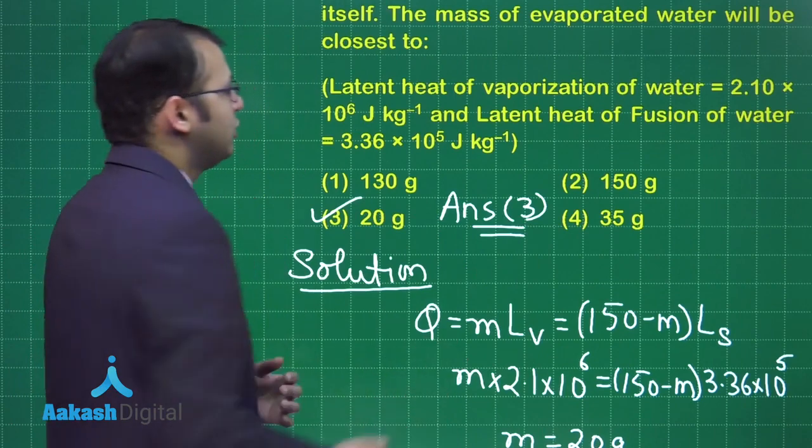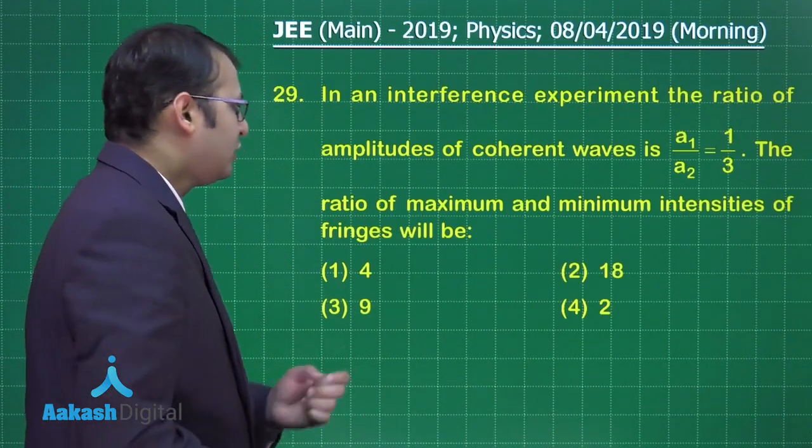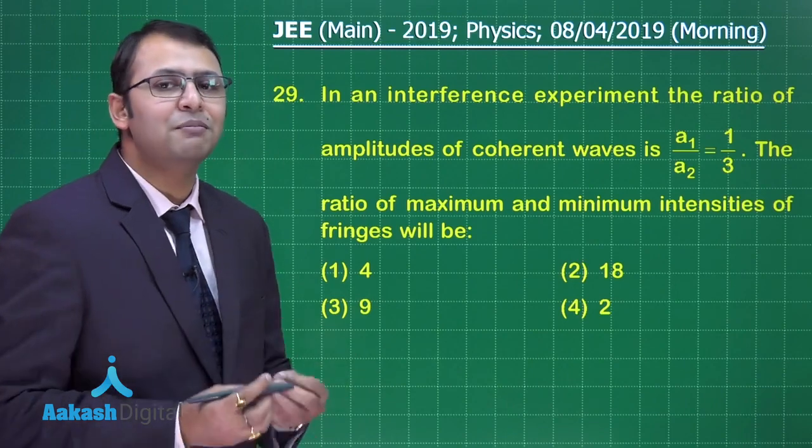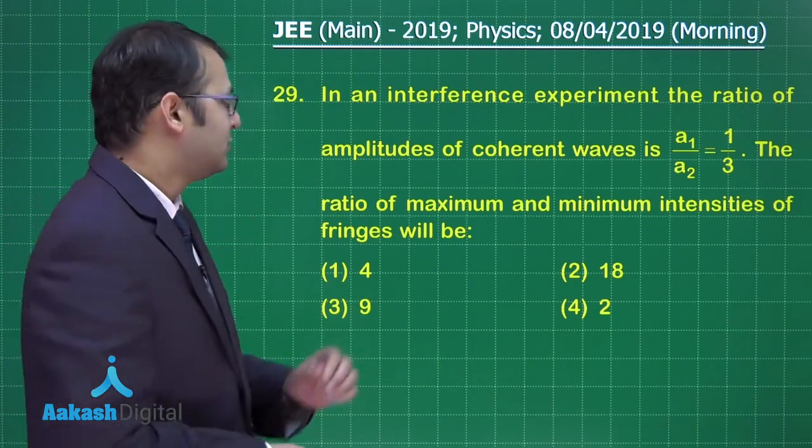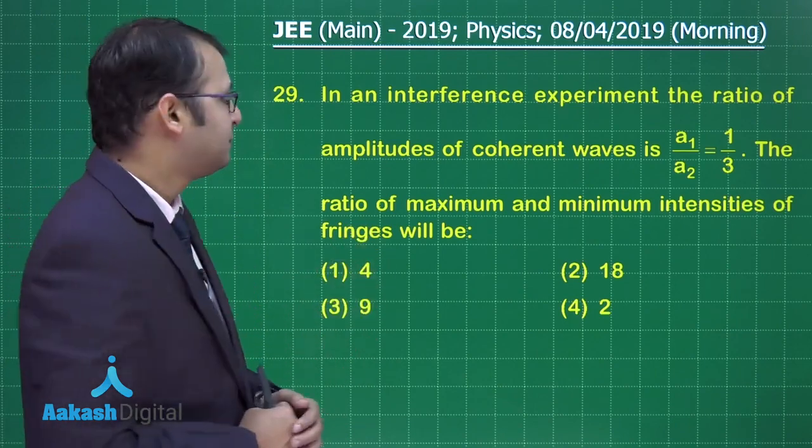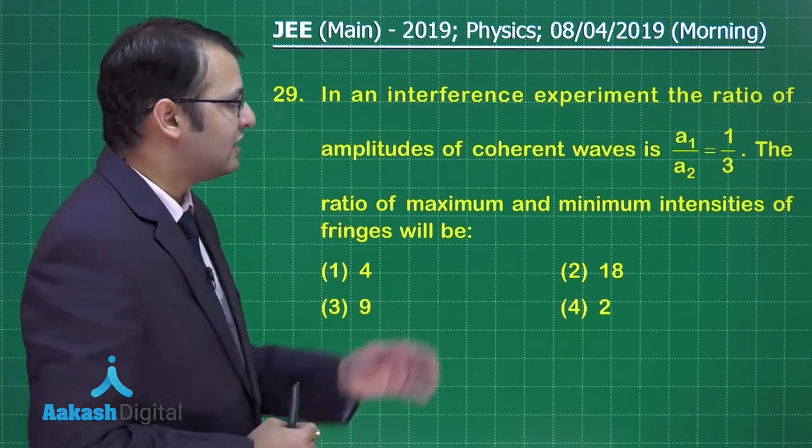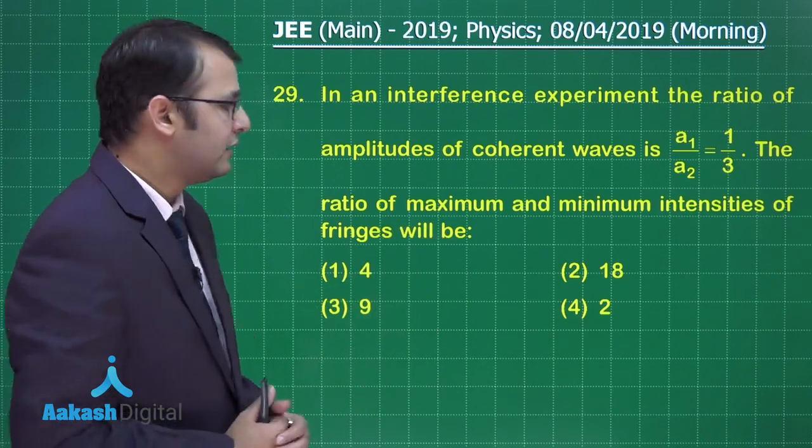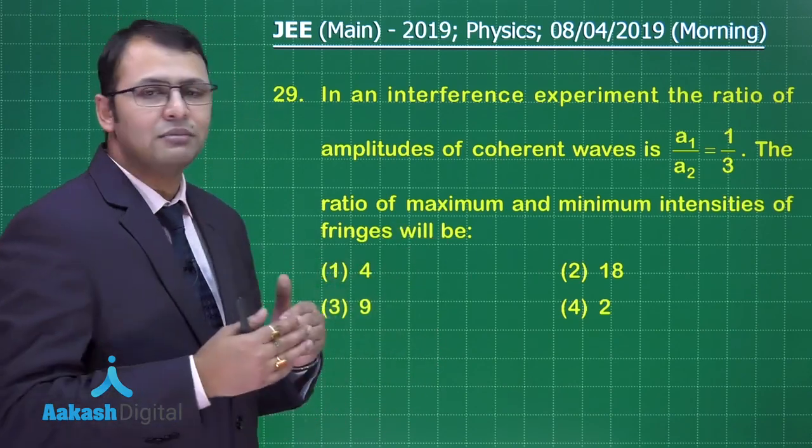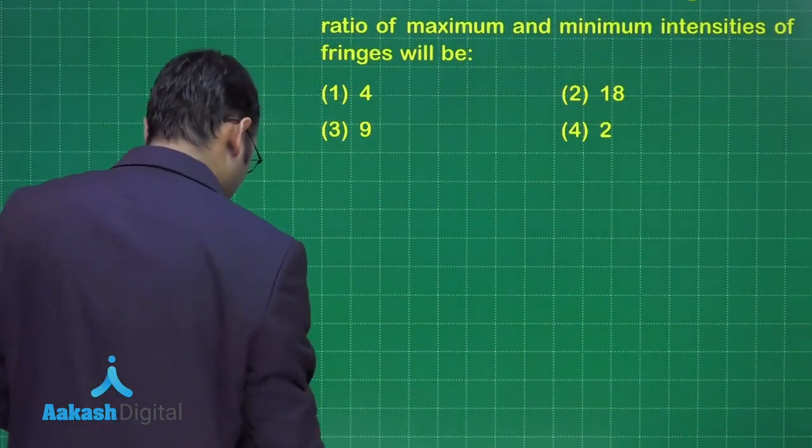Now let's move ahead with question number 29. This question is pretty simple and repetitively asked in JEE mains. This question belongs to optics, the topic of interference. In an interference experiment, the ratio of amplitudes of coherent waves is given as a1 by a2 equals 1 by 3. The ratio of maximum and minimum intensities will be. Pretty simple and formula based question.